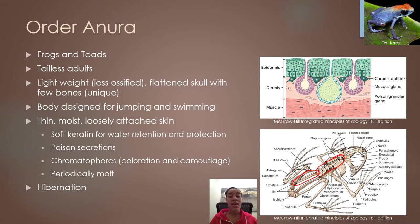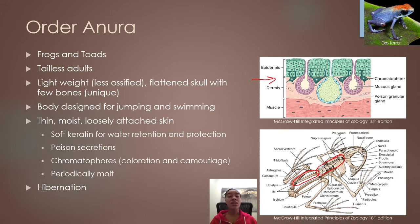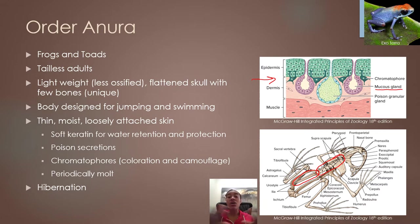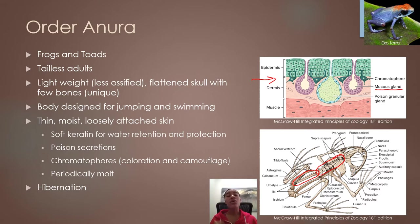Anurans use their skin as a secondary respiratory organ in addition to their lungs. Their skin is very thin, always kept moist, loosely attached to the body, and also keratinized. There are a variety of mucus glands in the skin of anurans that produce a coating of mucus over the skin, which is important for keeping them moist. If their skin dries out, they won't be able to undergo gas exchange via the skin. So these mucus glands are constantly putting out mucus to keep the skin moist for gas exchange.